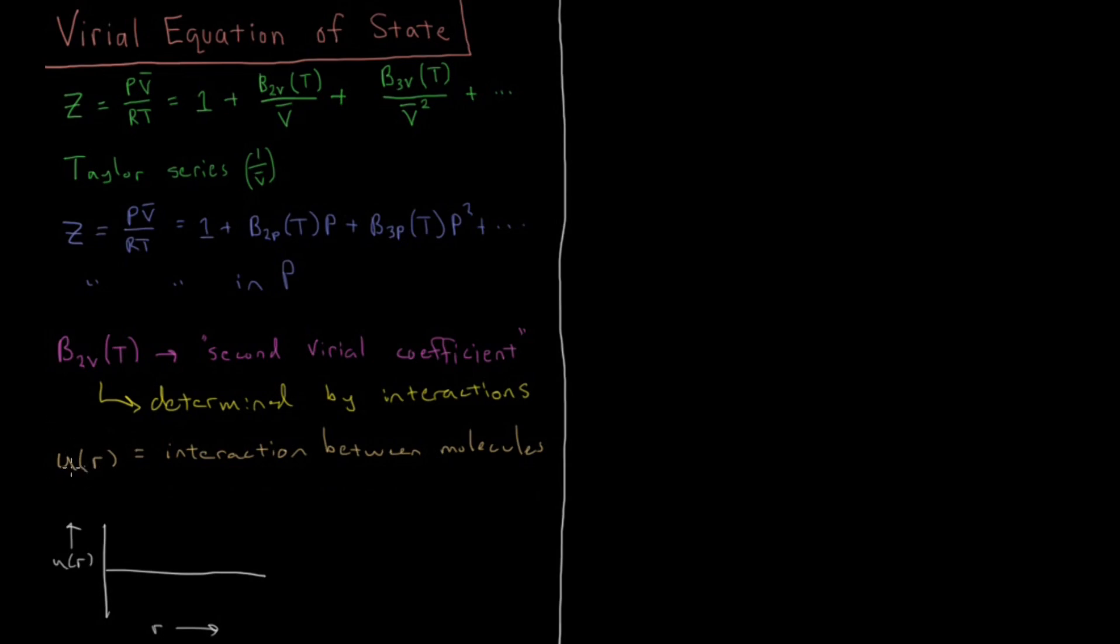So if we know what this interaction function is, which we could calculate by detailed quantum mechanical calculations, or we could estimate by some empirical rule, or there's some way in which we would obtain this. But if we were to know this function, if we were to know exactly how two pairs of a given gas molecules interact, say two argon atoms, two H2 molecules, etc., then we could actually write down an expression for what this second virial coefficient is.